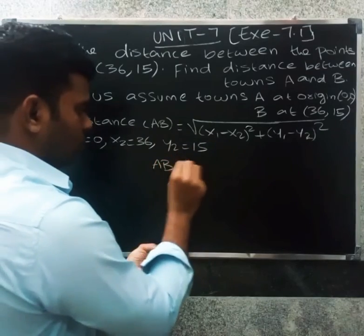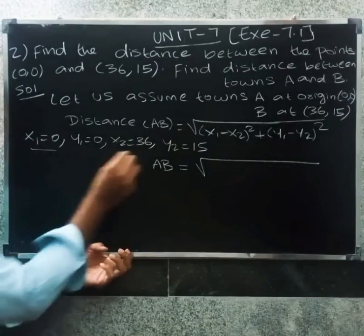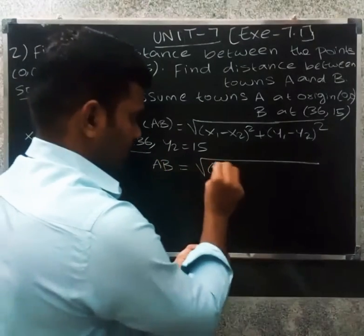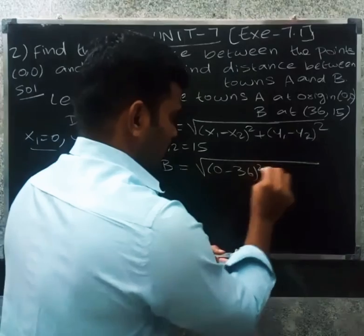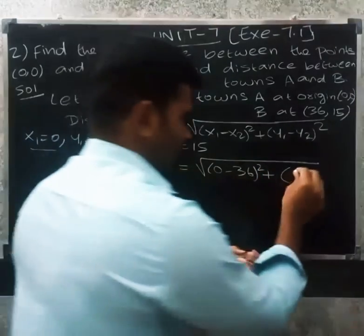So AB equal to root of x1 minus x2. So x1 minus x2 is 0 minus 36. 0 minus 36 the whole square plus 0 minus 15 the whole square.